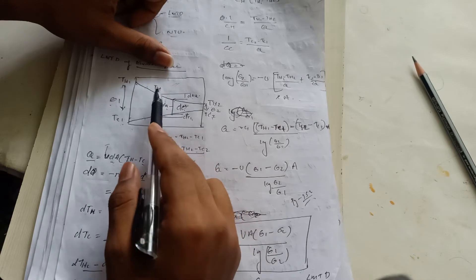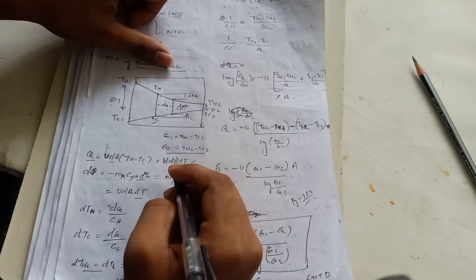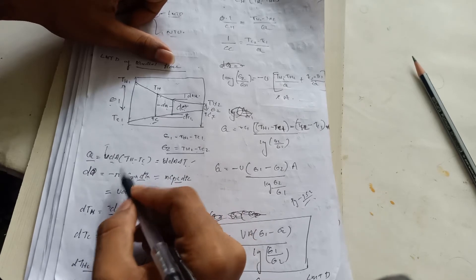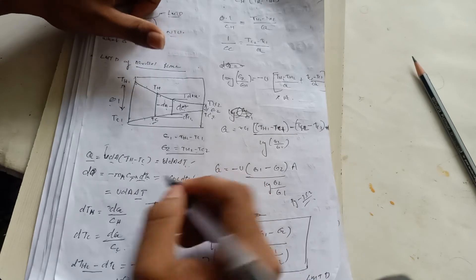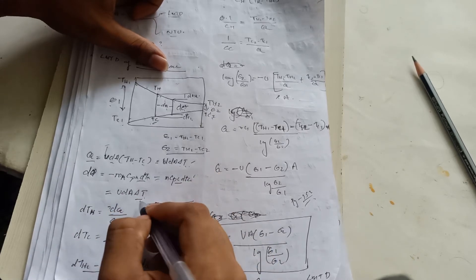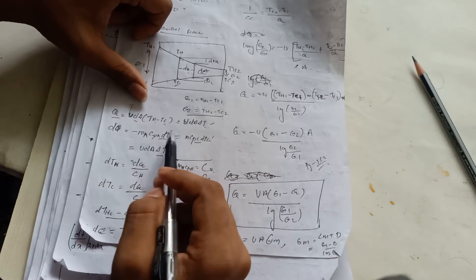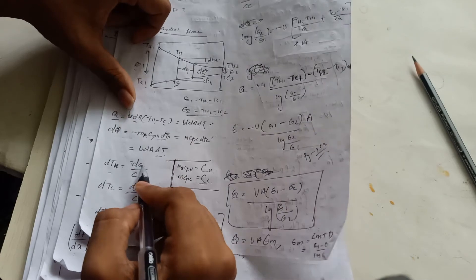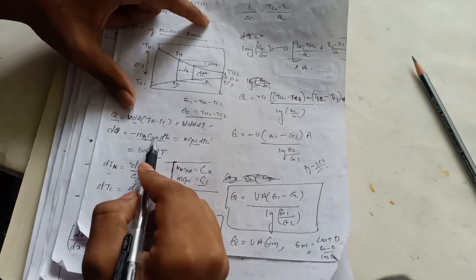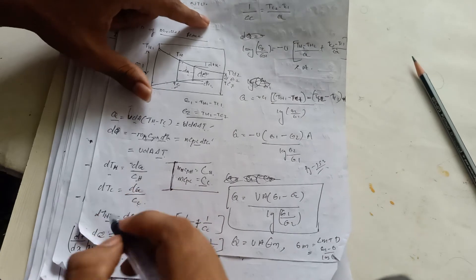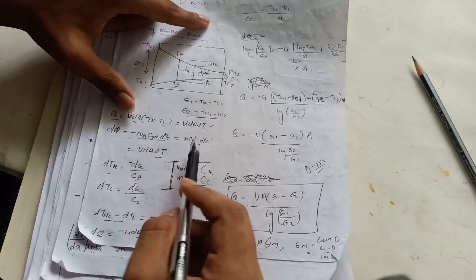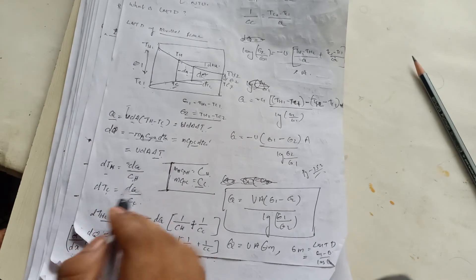For the hot fluid, the heat transfer gives: dTH equals minus dQ divided by CH, where CH equals mH·CpH is the heat capacity rate of the hot fluid. Similarly, for the cold fluid: dTC equals dQ divided by CC, where CC equals mC·CpC is the heat capacity rate of the cold fluid.